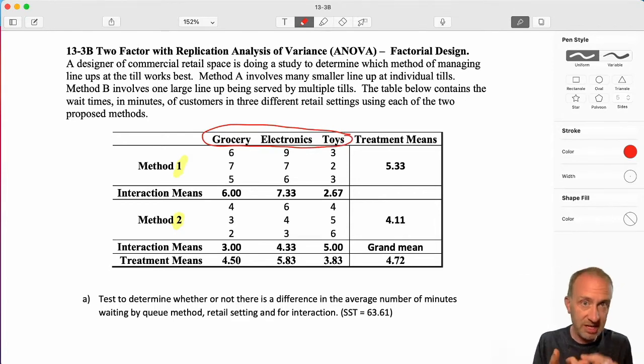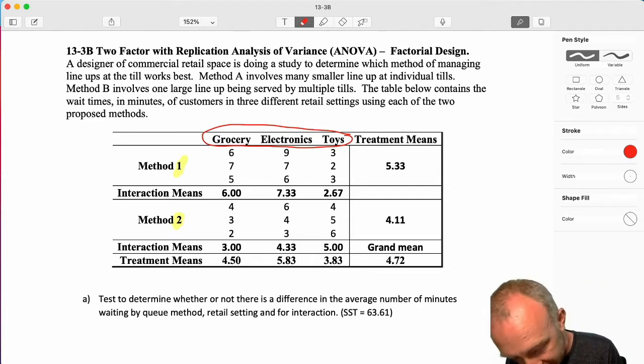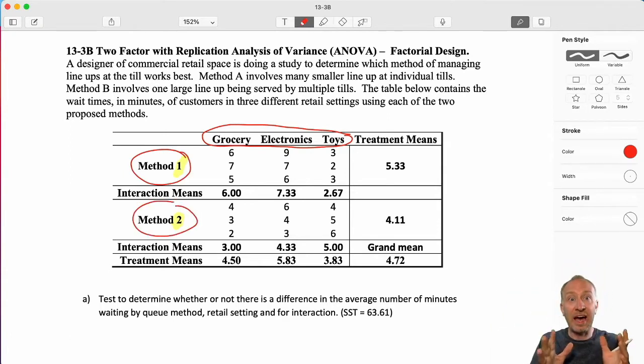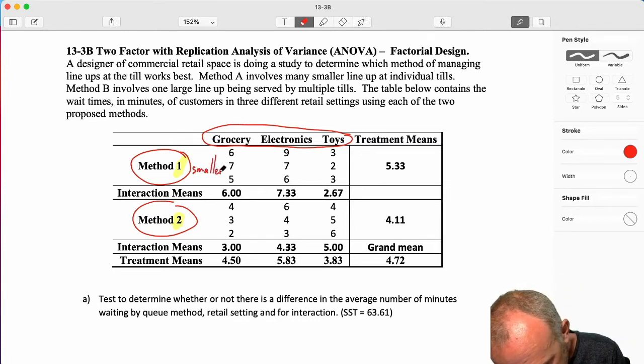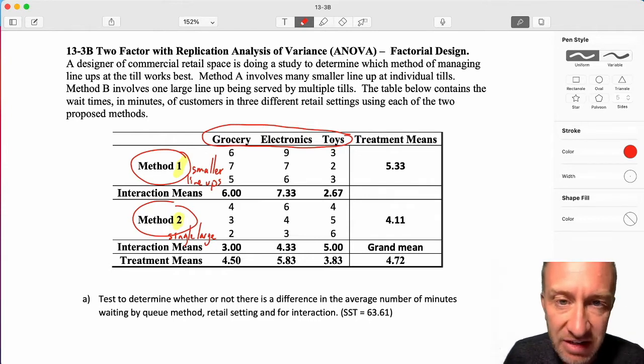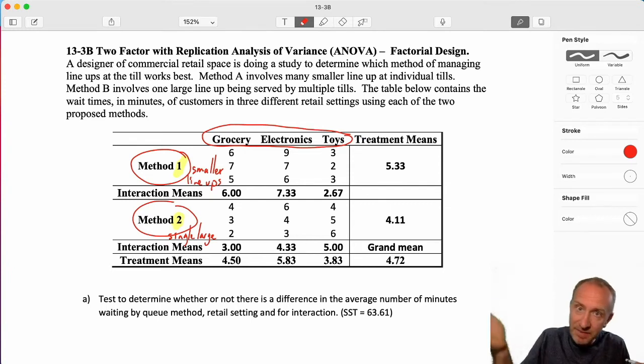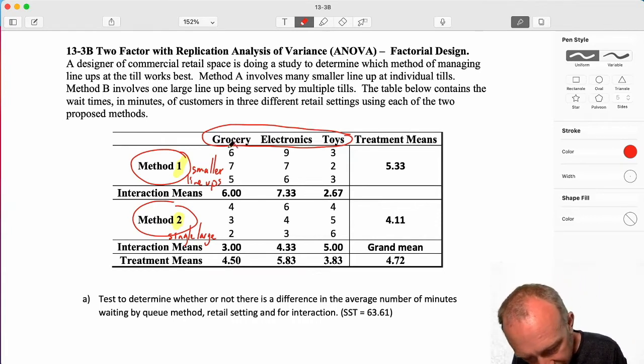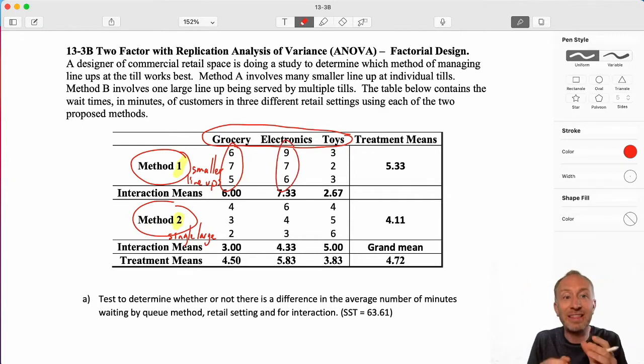We have here the retail setting. We have three treatments: grocery, electronics, and toys. Then here we have our different method. Method 1 and method 2. Either having many small lineups, remember this is the many smaller lineups, and this one is a single large. So we've probably all seen these when we go to different stores. Some have multiple tills, each till has their own little lineup, or sometimes you see one big long lineup, but everybody goes to one of many tills that are available.